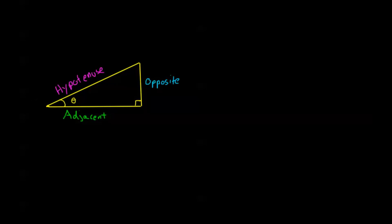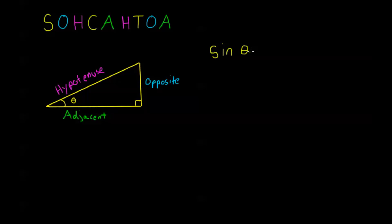Now we have a nifty little acronym called SOHCAHTOA, labeled with the same colors as adjacent, opposite, and hypotenuse. We can use this right triangle to make definitions for our basic trig functions in a different way than we did with the unit circle. So I have sine theta, cosine theta, and tangent theta. I'm only going to use SOHCAHTOA to define these three. We know that the other three trig functions are defined at the same time: the reciprocal of sine is cosecant, the reciprocal of cosine is secant, and the reciprocal of tangent is cotangent.